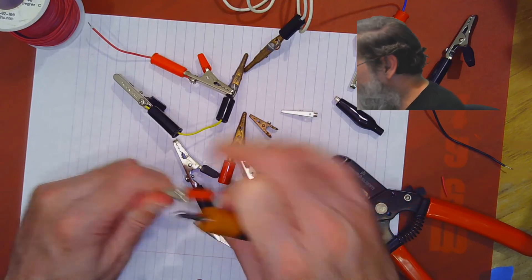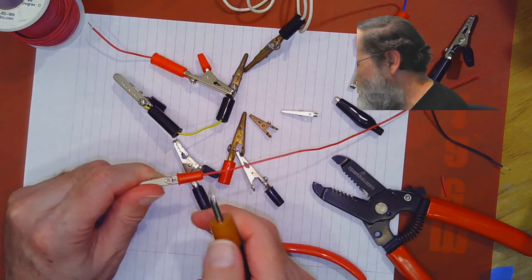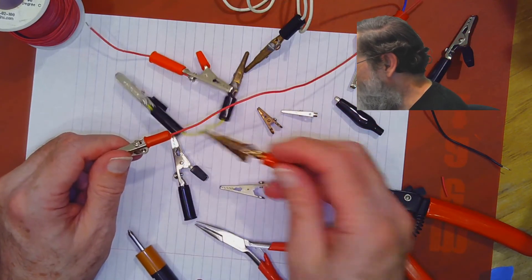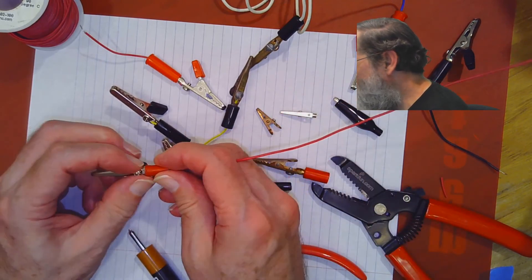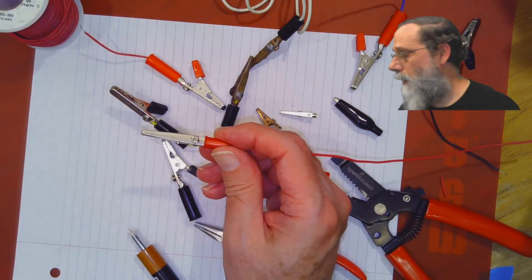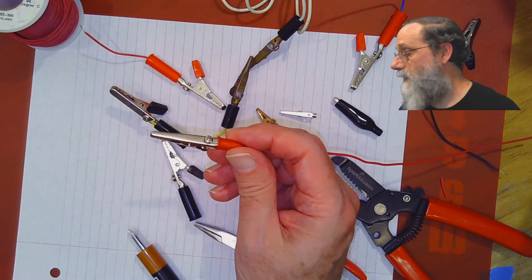You can get a little bit of strain relief sometimes by sliding the sleeve up if it's got a sliding sleeve. Some of them have a molded-on sleeve that doesn't move. But that makes a pretty good connection, and it's easily undone.